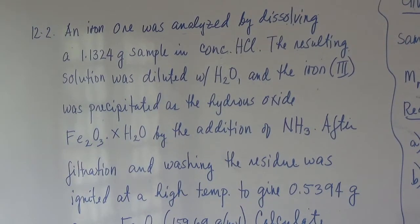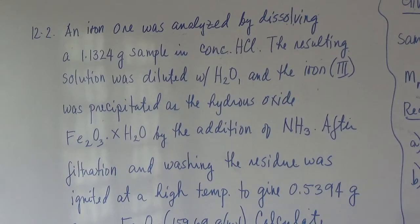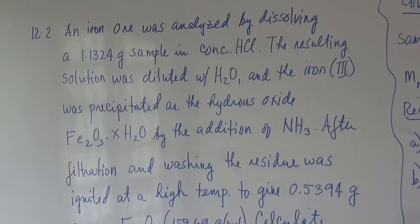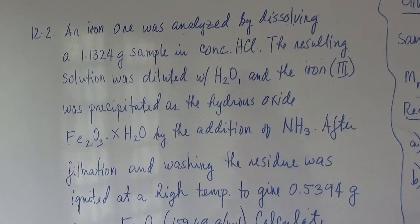Now, second problem of chapter 12, sample problem. But before we start, if you have noticed in the first problem, 12-1, you will notice that the way it is being computed, it's all stoichiometry. Now, in gravimetric analysis, the process is only about how to get the mass of the residue. Everything is stoichiometry.